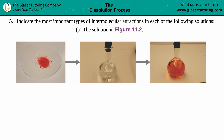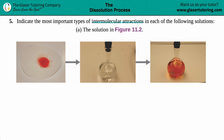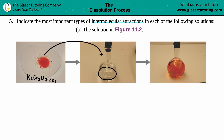Number five: indicate the most important type of intermolecular attractions in each of the following solutions. For letter A, we have to find out what type of intermolecular attractions are in the solution shown in figure 11.2. The orange solid shown is potassium dichromate, K₂Cr₂O₇, and it is in its solid form — not aqueous. It is being put into a container of water.